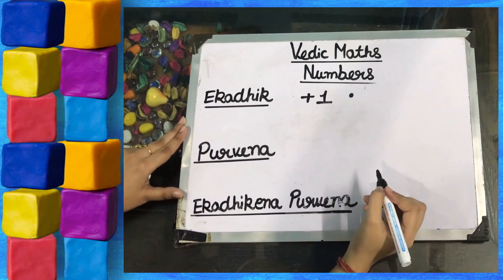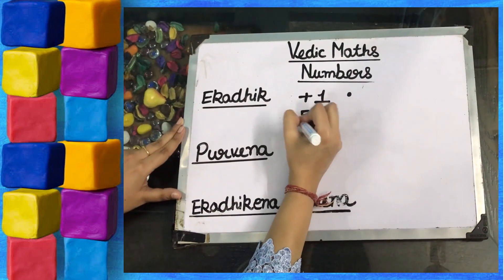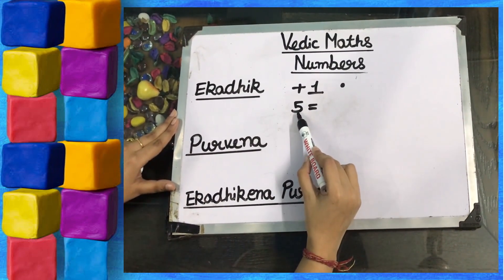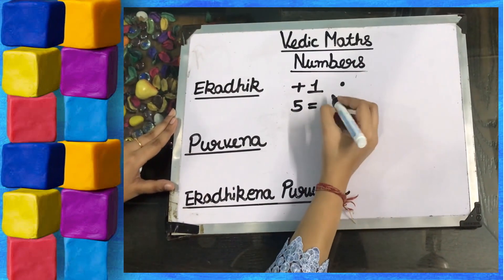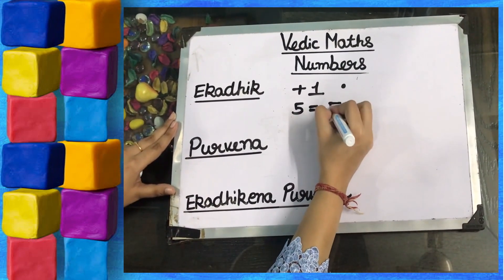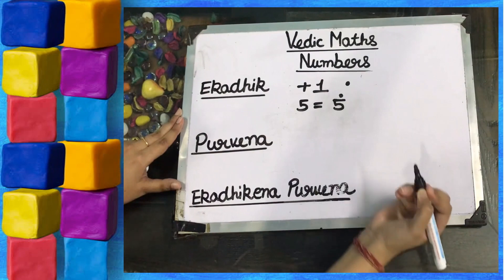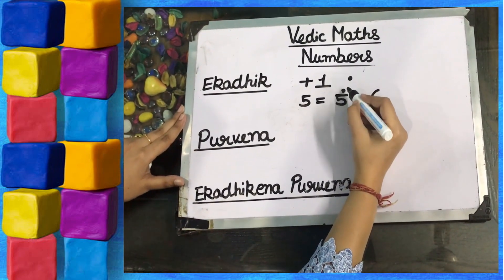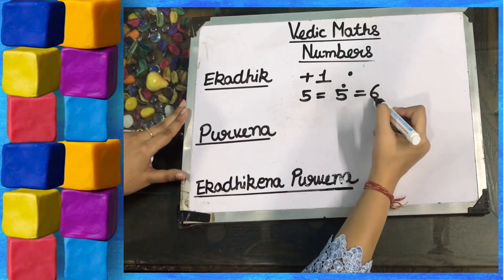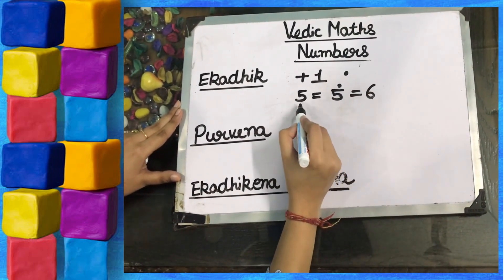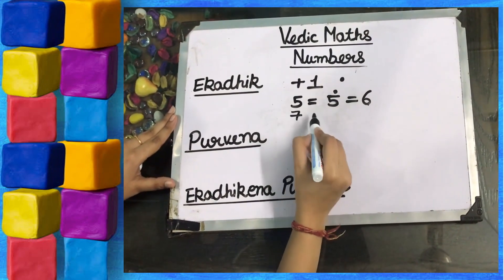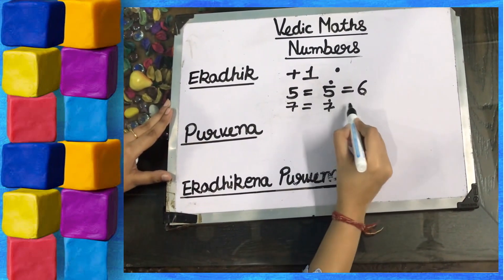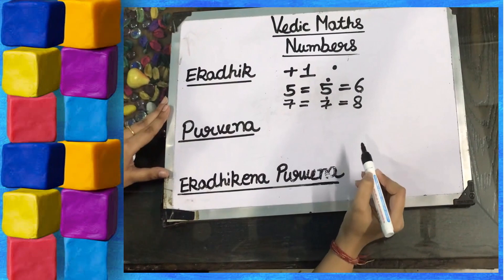For example, write the Ekadik of 5. Ekadik of 5 means plus 1 in 5, so it will be 6. We represent it with a dot — this dot shows plus 1, so 1 plus 5 is 6. Now write the Ekadik of 7. Ekadik of 7 means 7 plus 1, so it will be 8.